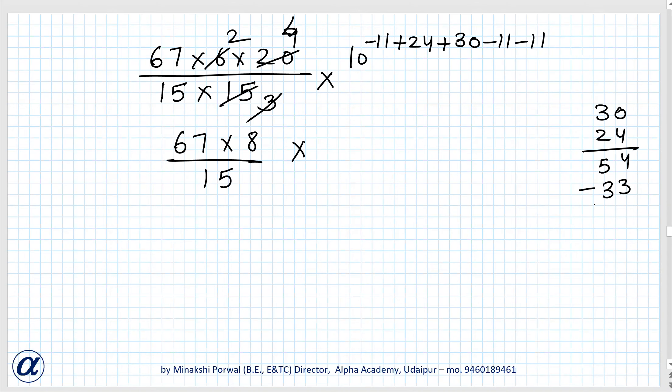Now we can multiply 67 × 8 / 15. 30 + 24 that is equal to 54, 54 - 33 that is 21. So it is 10²¹. Now we will multiply 7 eights are 56, 5 sixes, 8 eights are 48 plus 5, 53 / 15 × 10²¹.